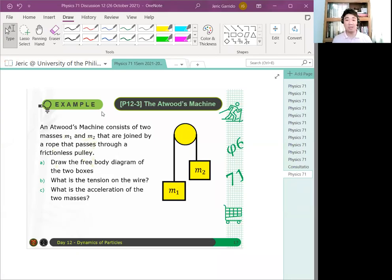Okay, let's solve this. The third problem, which is a very classic problem. It's what's known as Atwood's Machine. So Atwood's Machine consists of two masses, M1 and M2, that are joined by a rope that passes through a frictionless pulley. There are many variations of Atwood's Machine, but we will first go with the simplest, which has a lot of assumptions.